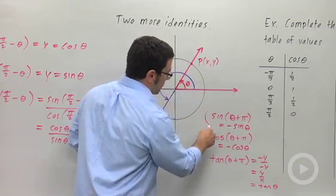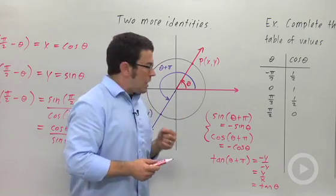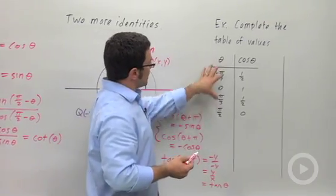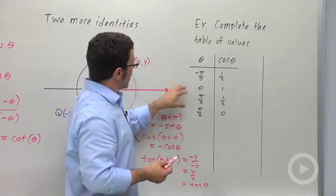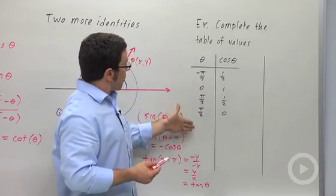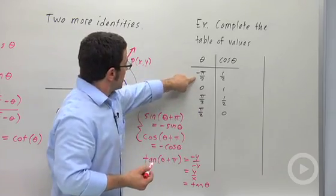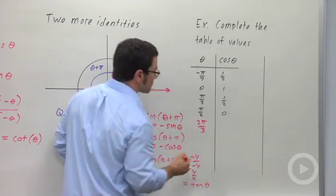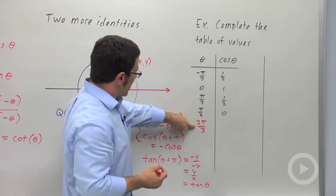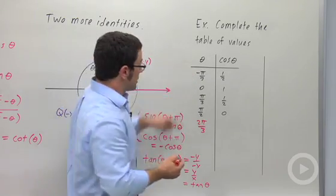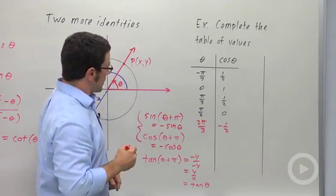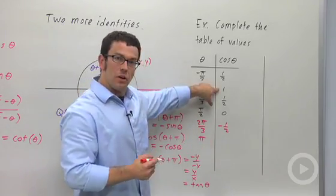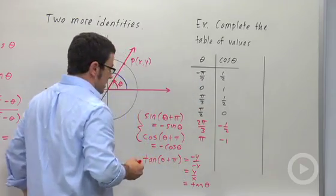The interesting thing here is that for sine and cosine, when you add pi, you get the opposite of the original value. Suppose I want to complete a table of values and all I know are four values of cosine. I can continue these as far forward as I want by adding pi. If I add pi to negative pi over 3, I get 2 pi over 3, and the cosine of 2 pi over 3 will be the opposite of the cosine of negative pi over 3, so negative one half. If I add pi to 0, I get pi, and the cosine of pi will be the opposite of the cosine of 0, which is negative 1.